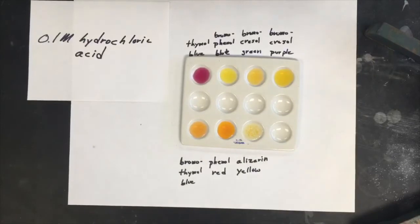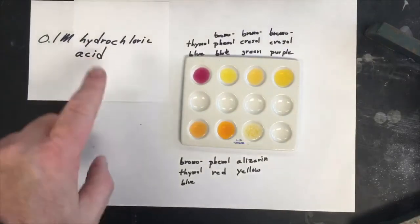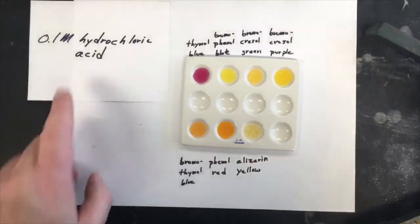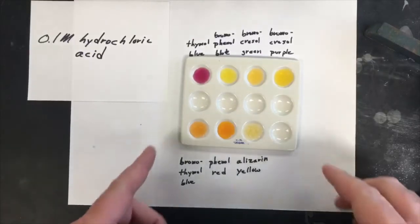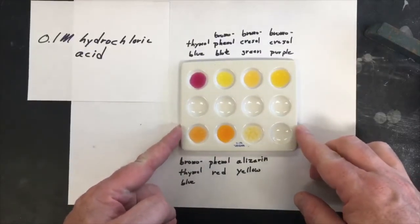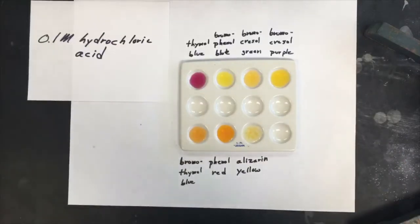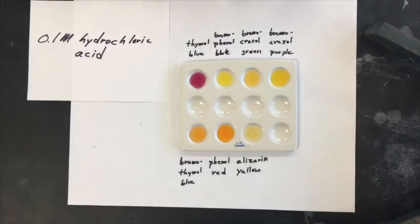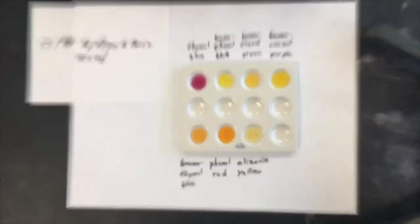Alright, now we have the third sample. This is 0.1 molar hydrochloric acid. And again we have the dyes in their same positions. And about three drops of hydrochloric acid with one or two drops each dye. Let me zoom in a little.